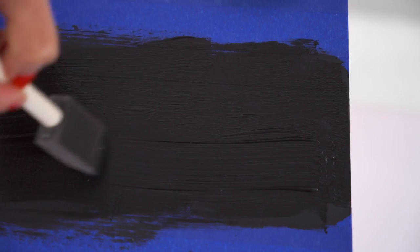First, use painter's tape to tape off a three inch section in the middle of the table. This will be where you'll apply the magnetic paint.